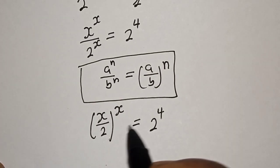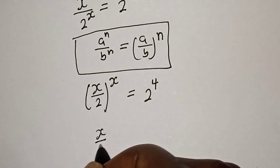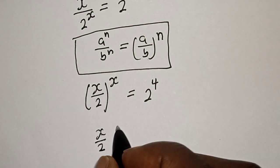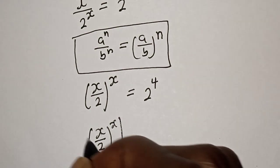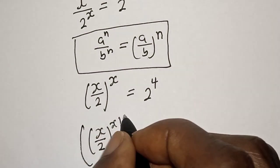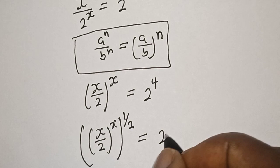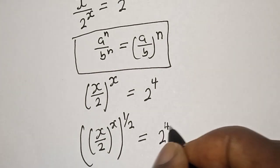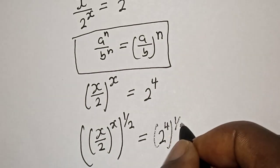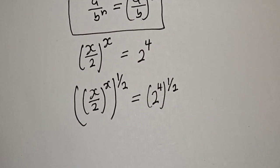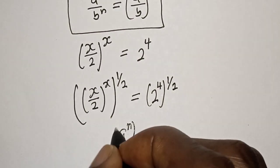Now let's multiply the exponent of both sides by one half. That is: s over 2, raised to power s, multiplied by 1 over 2, is equal to 2 raised to power 4, to the power of 1 over 2.